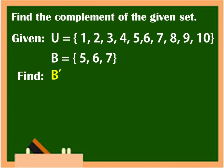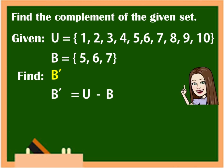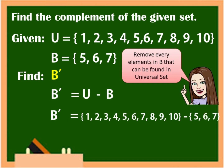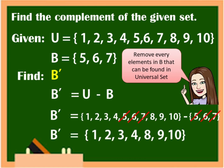Again, we are going to subtract or remove the elements in B that can be found in U. So, B complement is equal to the elements of the universal set, which is 1 to 10, minus the elements in B, which are 5, 6, 7. Remove all elements in B from U. What are the elements left? 1, 2, 3, 4, 8, 9, 10. So, therefore, B complement is equal to 1, 2, 3, 4, 8, 9, 10.